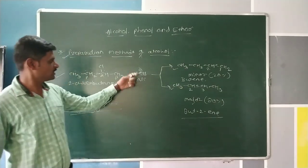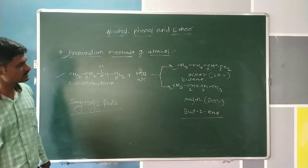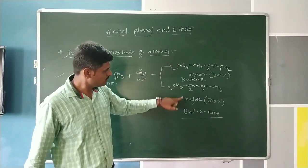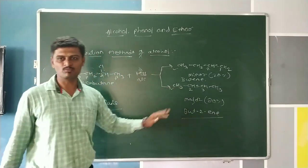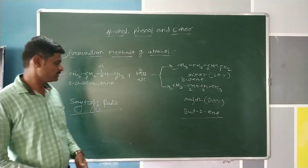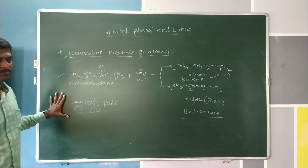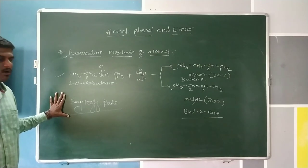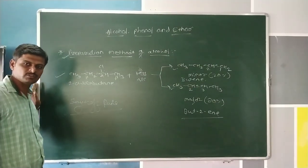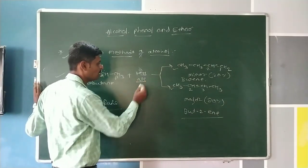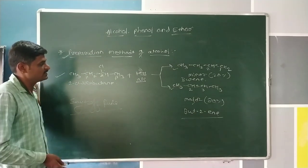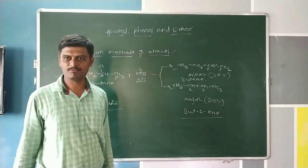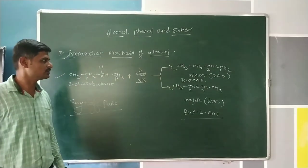This is the first preparation method of alcohol from alkyl halide using aqueous KOH. Instead of aqueous medium we can use alcoholic medium. By changing the medium of KOH from aqueous to alcoholic, the product also changes. This is the first preparation method — thank you.